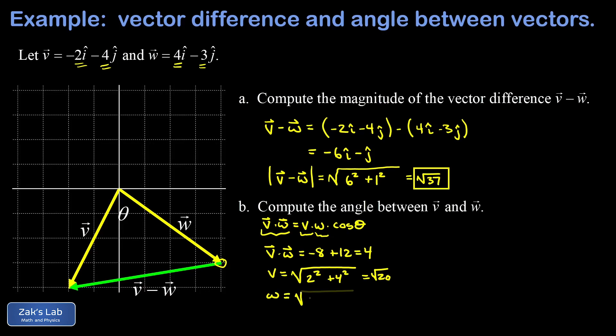Now we need the magnitude of w. That's √(4² + 3²). That gives me 25 inside the square root, which reduces to 5. So we have everything we need, and we just plug into the geometric formula for the dot product.